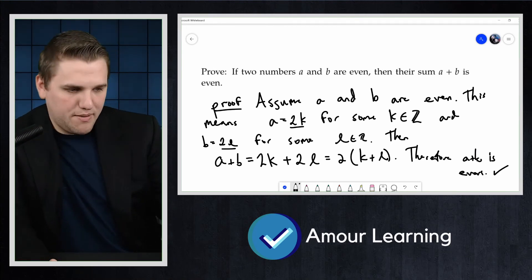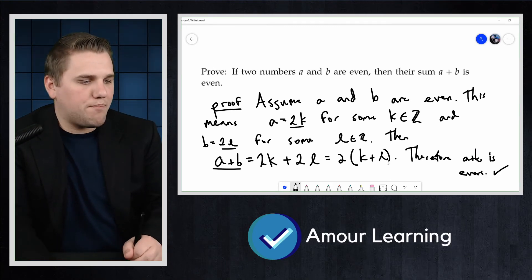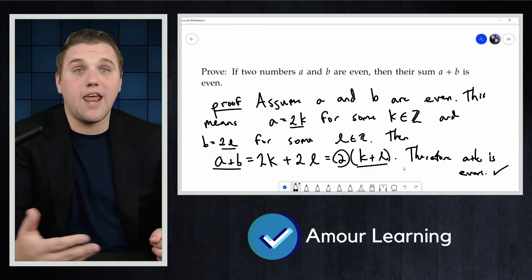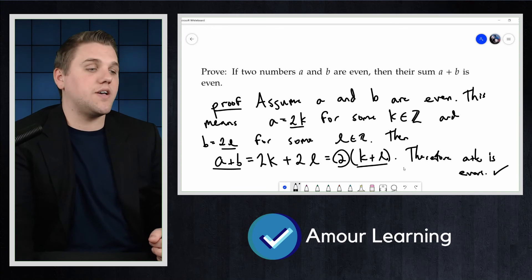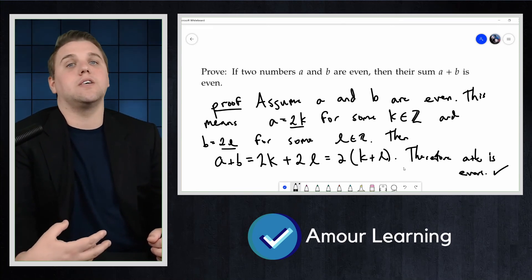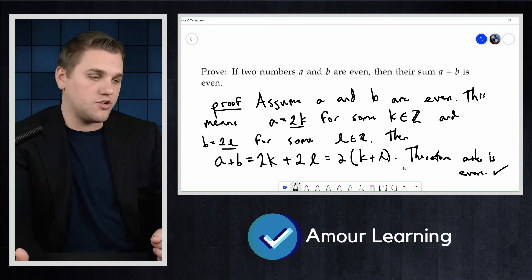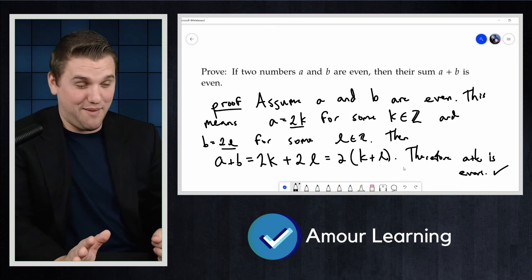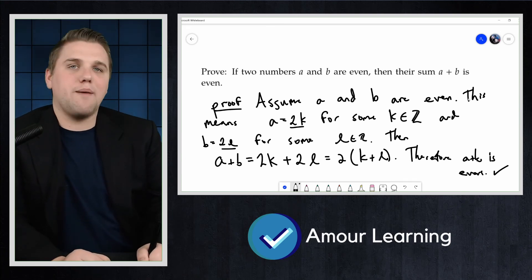Now, let me explain what just happened here. We showed that A plus B is two times an integer K plus L. If K and L are integers, then K plus L is an integer as well. Some professors might require you to explain why that is, and that's because addition is closed under the integers. A professor really shouldn't require that, though. So therefore, A plus B is even.